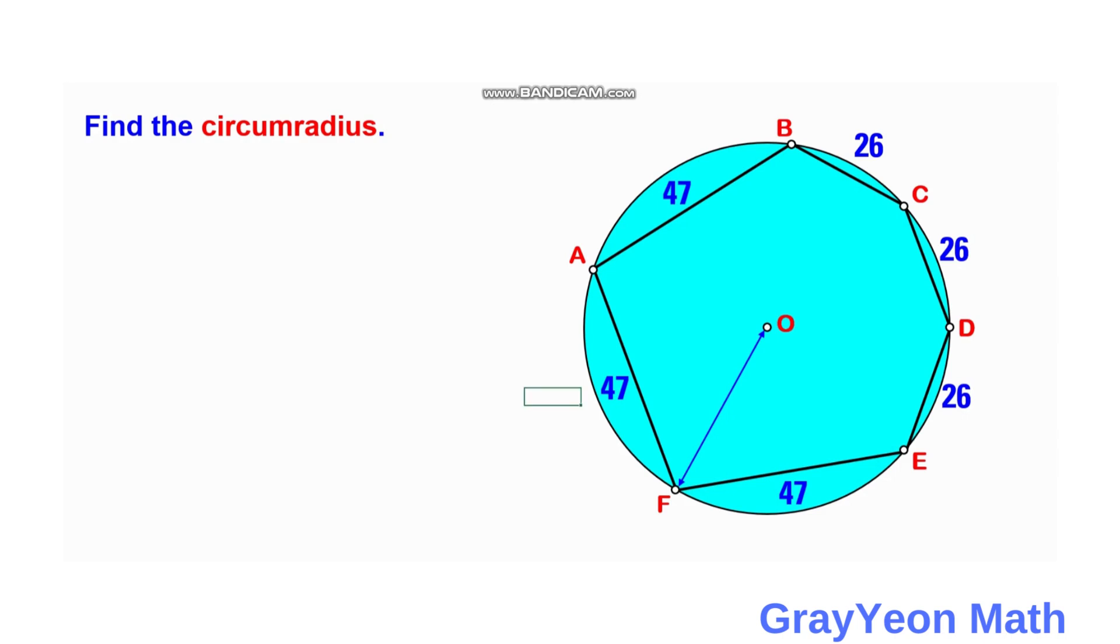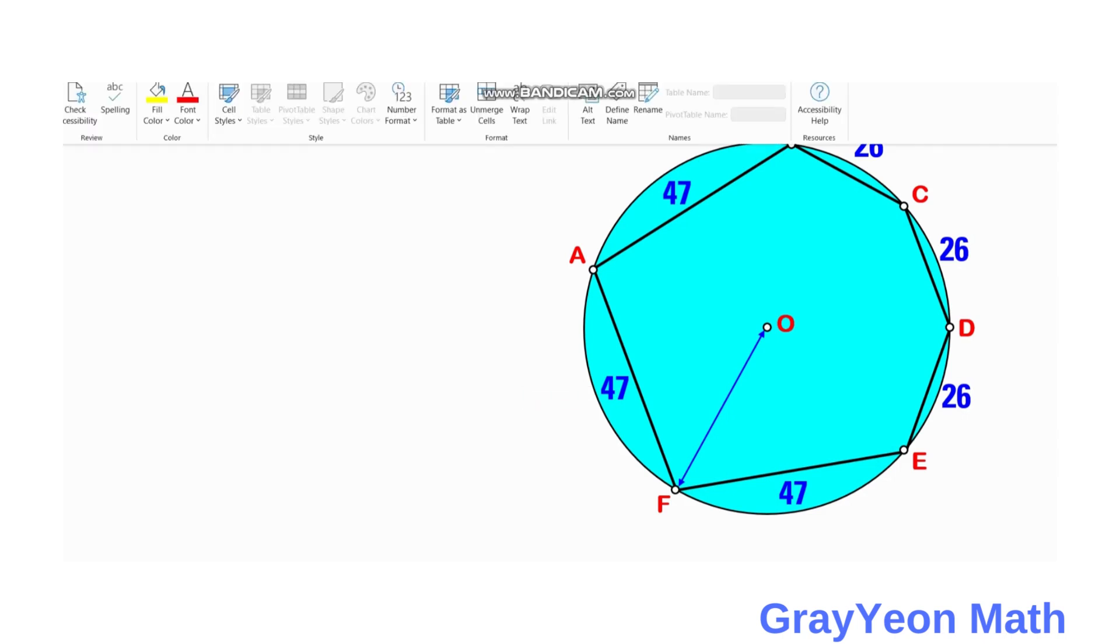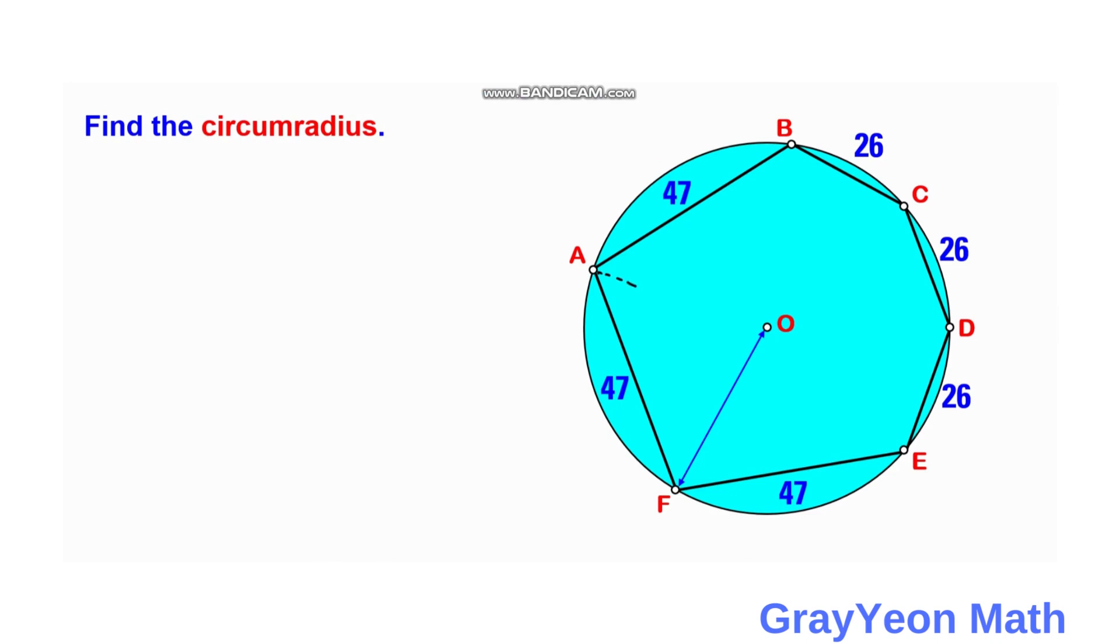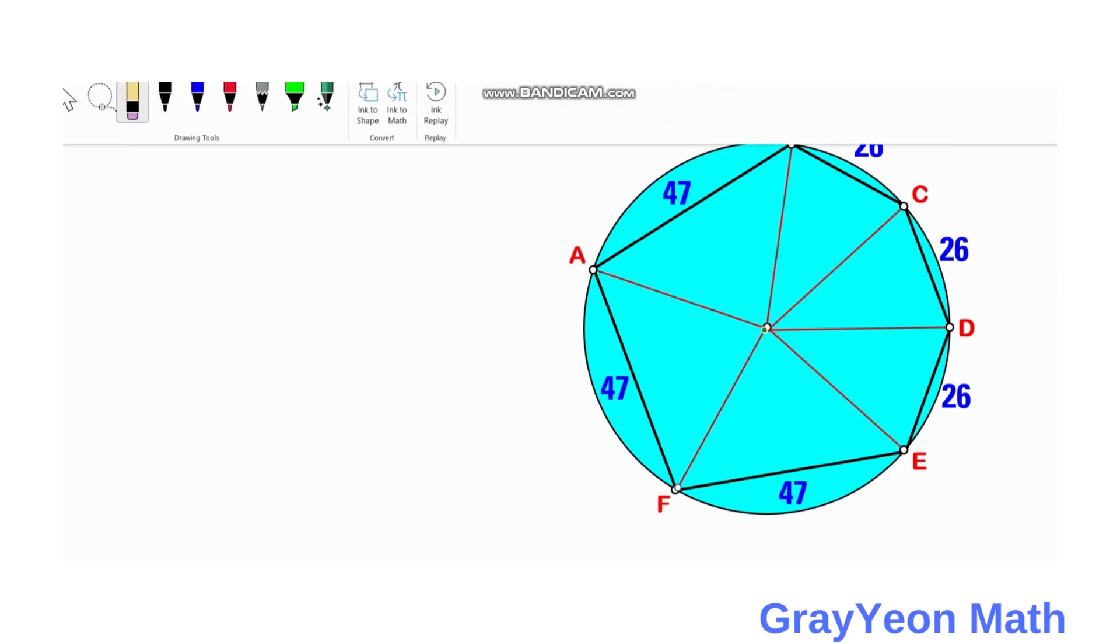We can start by drawing segments from the center of this circle to the vertices. We can draw line AO and BO and so on. Next, we can label the angles opposite every corresponding side. For the 47 unit sides, we can label this as alpha. And for the 26 unit sides, the opposite angle, we can label as beta.